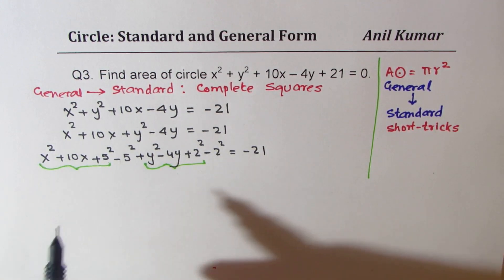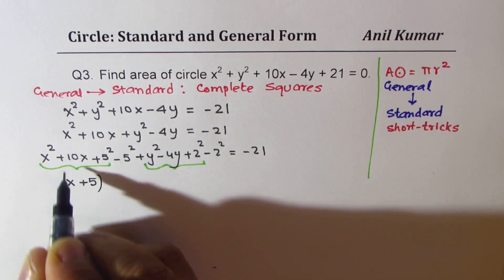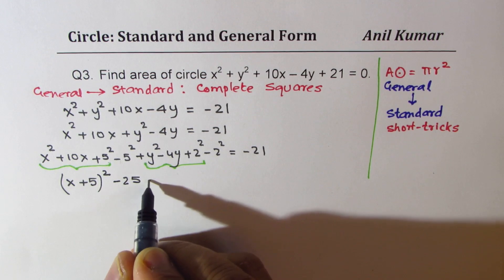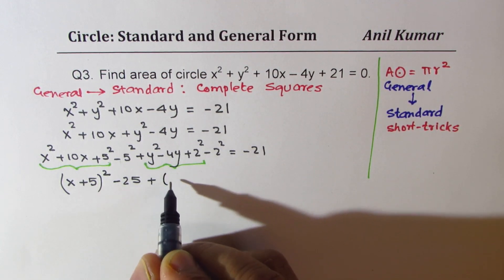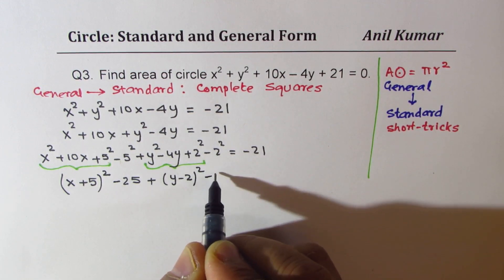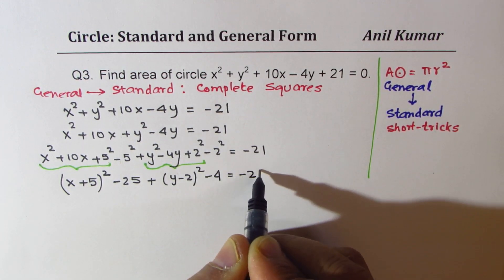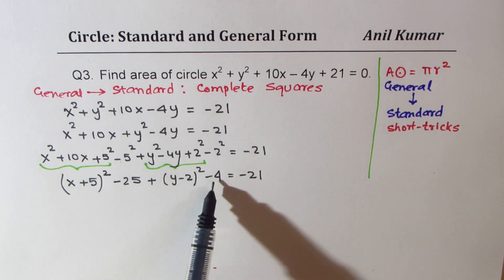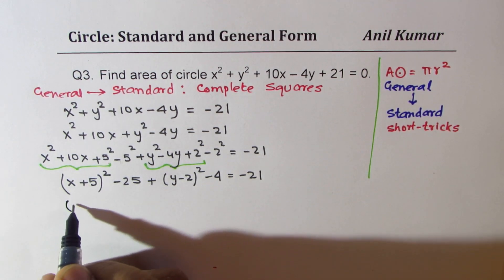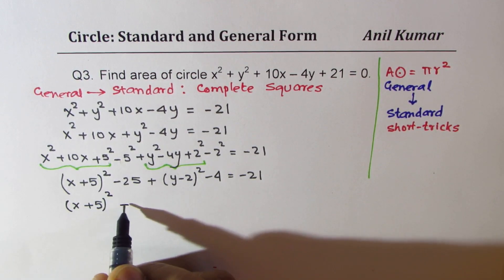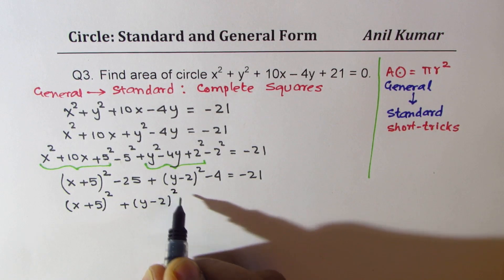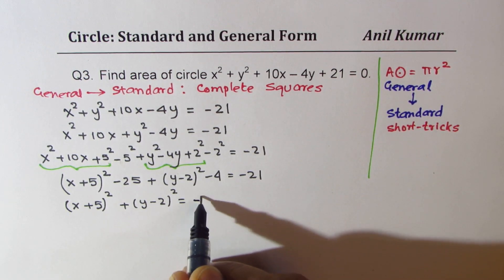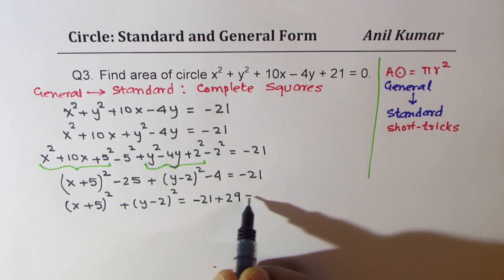These three terms form a perfect square and these three also form a perfect square. Combining them: (x + 5)² - 25 + (y - 2)² - 4 = -21. Moving the constants to the right side: (x + 5)² + (y - 2)² = -21 + 25 + 4 = 8.